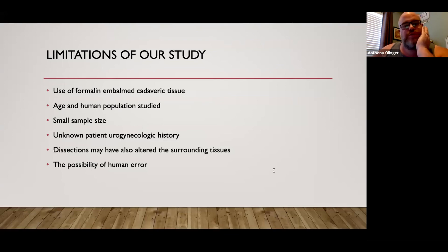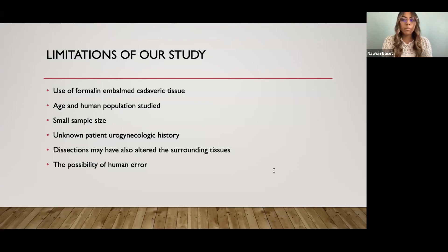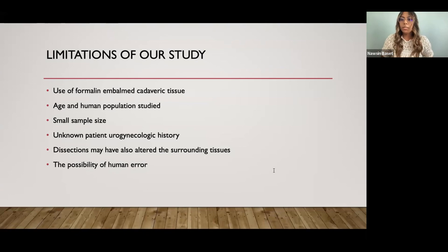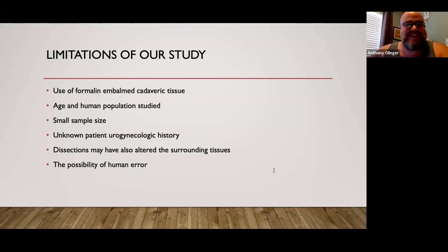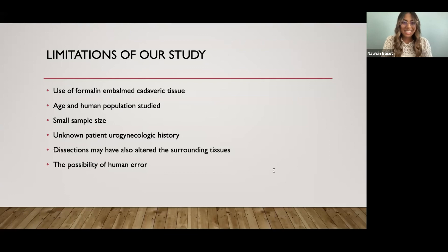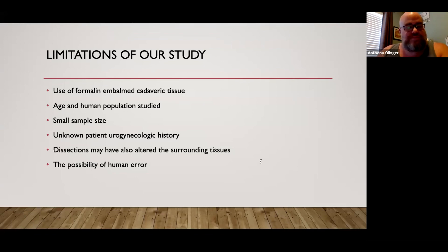When you say dissections may have altered surrounding tissue—what specifically? When we took measurements of the arteries, we tried to keep them carefully in place, but as we were teasing through the tissue we might have been moving things slightly. Also, since first-year students were dissecting this region, particularly the abdomen, before I even got to it, that could also have altered our measurements. As for human error—you don't need to list that as a limitation unless robots are running your next project. Overall, that was a very good talk. I was really pleased with the presentation.